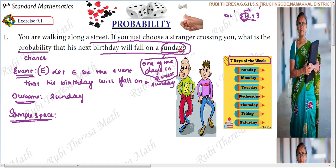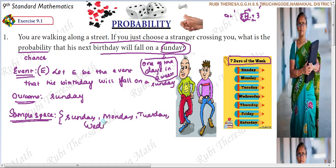If you have 7 days, the sample space will have all the possible outcomes. What are the days in the sample space? Sunday, Monday, Tuesday, Wednesday, Thursday — these are the possible outcomes. One week has 7 days. The favorable outcome — the expected outcome for us — is Sunday.